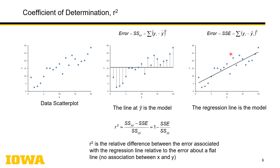What if all points were scattered like buckshot and the best fit line is pretty flat? Then there would be very little difference between the flat line assumption and the actual best fit line, which is also flat. These two terms in the numerator are essentially the same, and r-squared goes to zero. That's a shorthand way to visualize what's going on with r-squared.